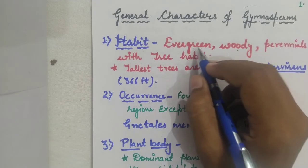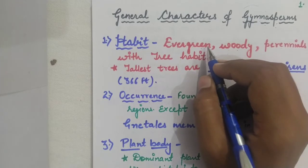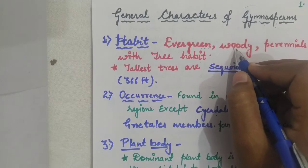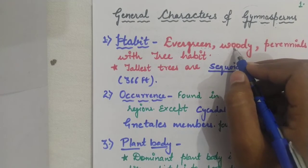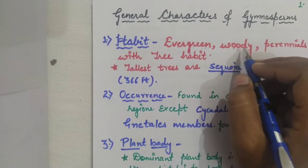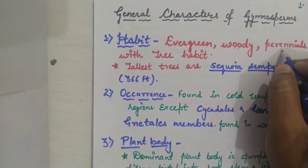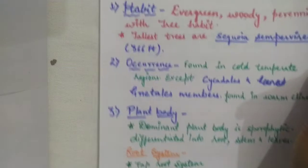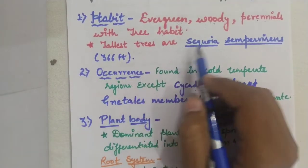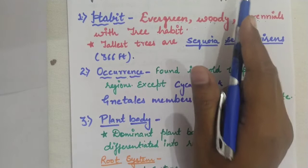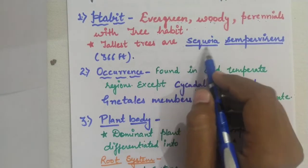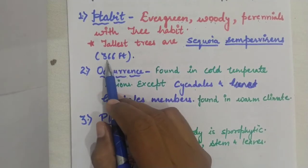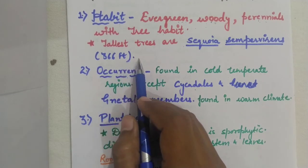Evergreen means these plants are not deciduous — seasonal leaf fall is absent. The plants are woody, meaning the stem is hard, not soft as found in herbaceous angiosperms. They are perennial, living for many years with a tree habit. The tallest trees are found in this group of plants; the tallest tree is Sequoia sempervirens of genus Sequoia, approximately 366 feet in height.